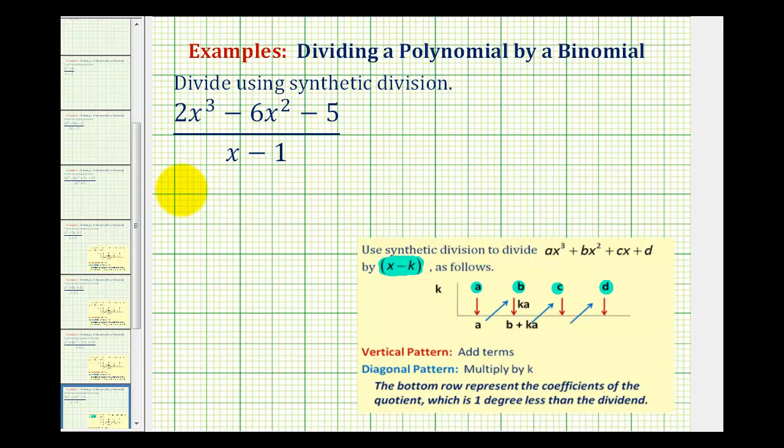Meaning we can think of this as 2x³ - 6x² + 0x - 5 divided by x - 1. So our coefficients will be 2, negative 6, zero, and negative 5.